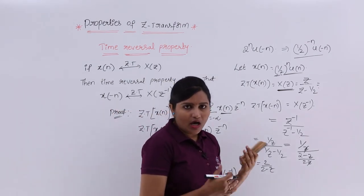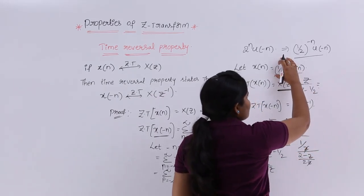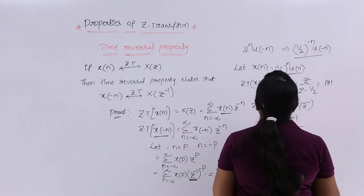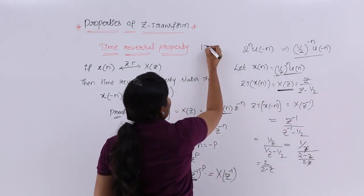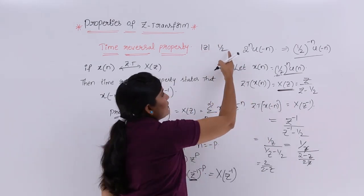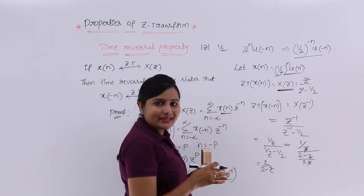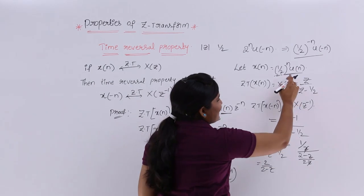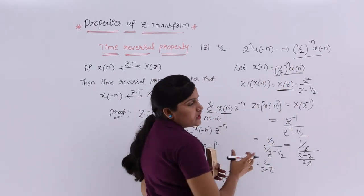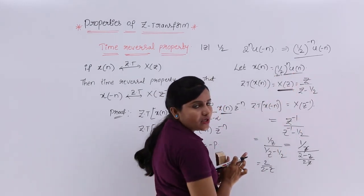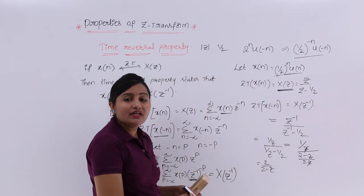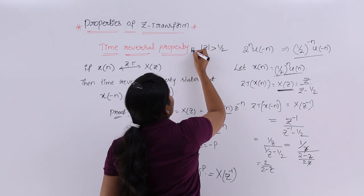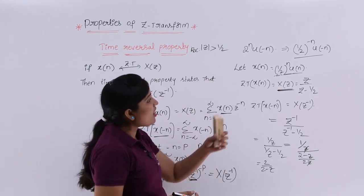Coming to ROC — how does the region of convergence change? For X(Z) = Z/(Z - 1/2), equating the denominator to zero gives the pole at |Z| = 1/2. Since X(n) = (1/2)^n·U(n) is a right-sided (purely positive) signal, the ROC is |Z| > 1/2.